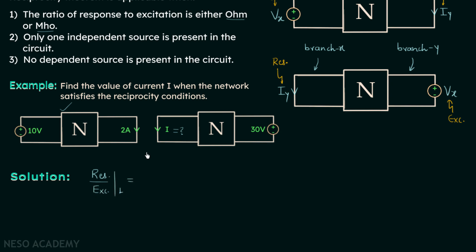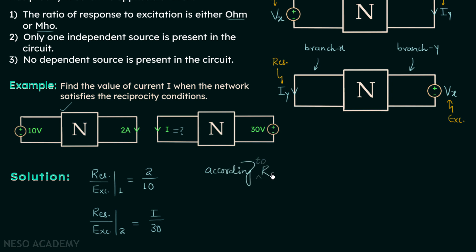In case number one, the response is 2 amperes and the excitation is 10 volts. Now let us find out the ratio of response to excitation in case number two. The ratio of response to excitation in case number two will be I over 30 volts. According to the reciprocity theorem, the ratio of response to excitation will remain the same.